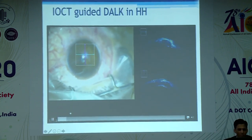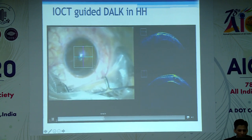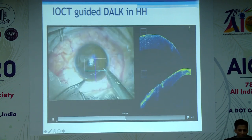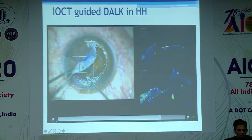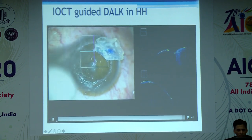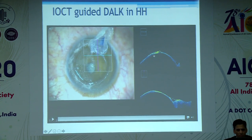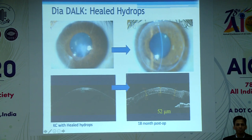In cases of healed hydrops, intraoperative OCT is quite useful. You can see the healed hydrops area, and a layer-by-layer dissection is performed rather than attempting a big bubble. At the area of healed hydrops, one can move slightly anteriorly to leave the scar behind. The scar area still has some stroma on it — a technique that can be fine-tuned with the intraoperative microscope. The post-op picture shows only 52 microns of stroma remaining at the back, with a faint scar, and at 18 months post-op the healed hydrops area has moved away from the visual axis.